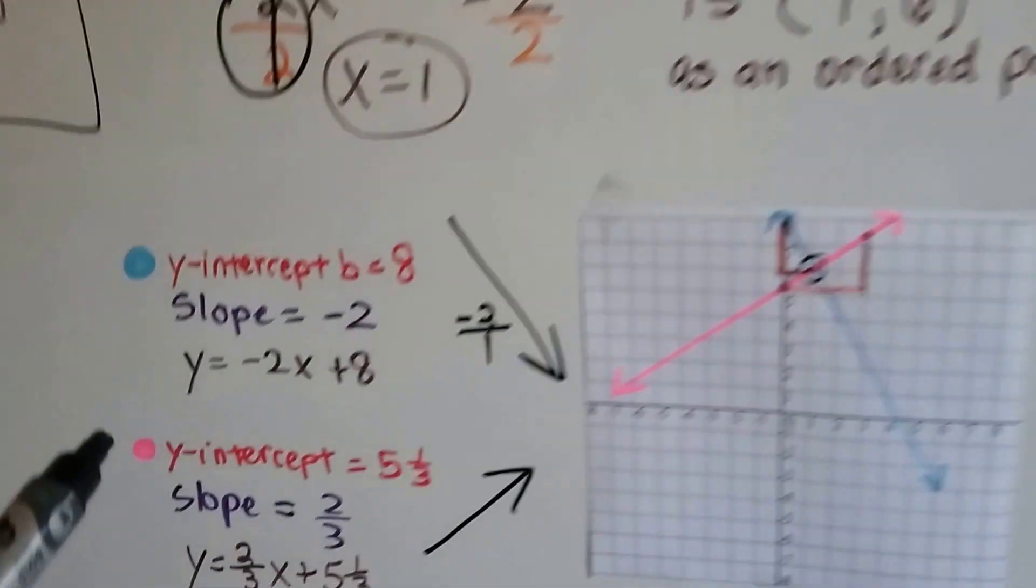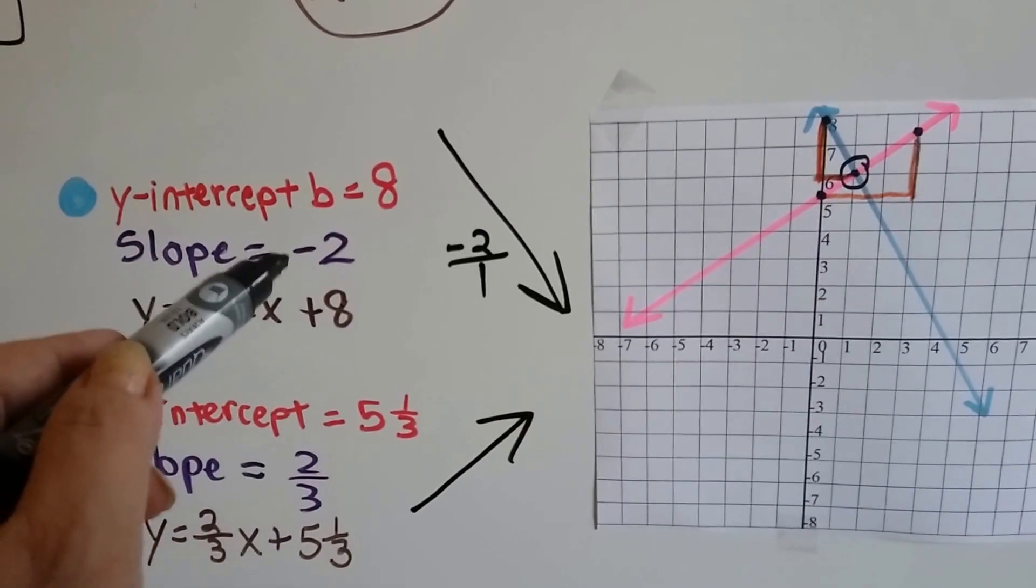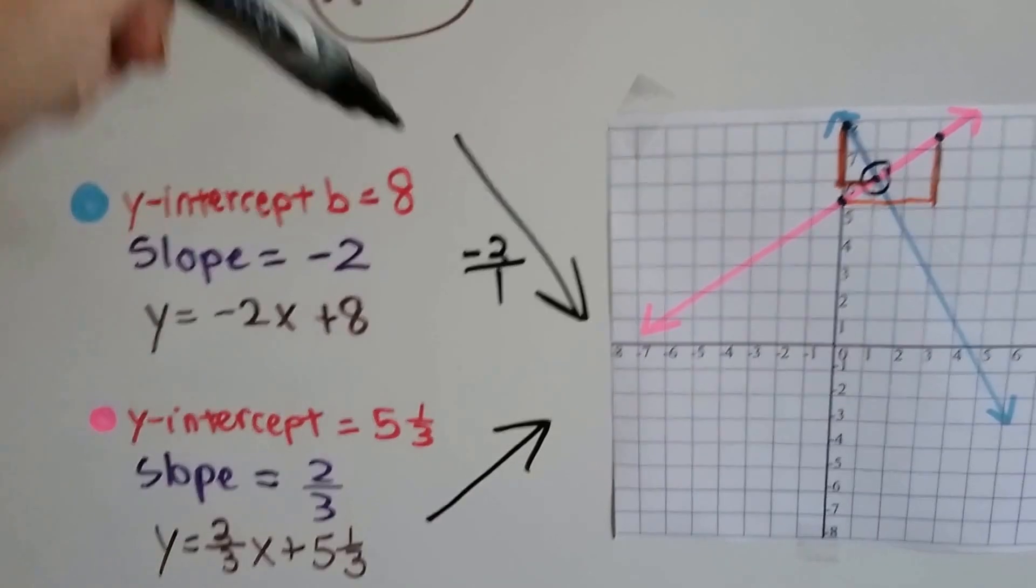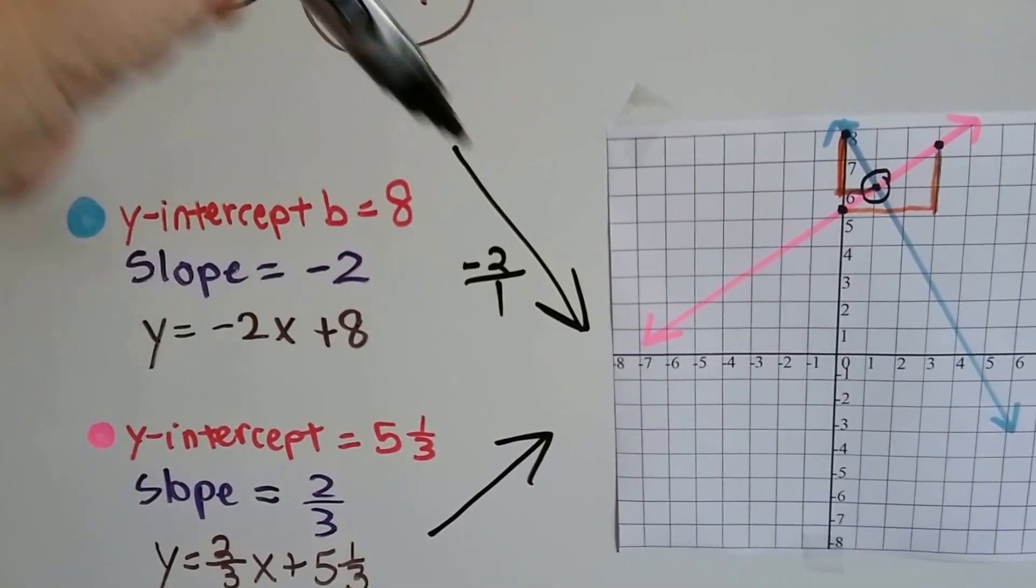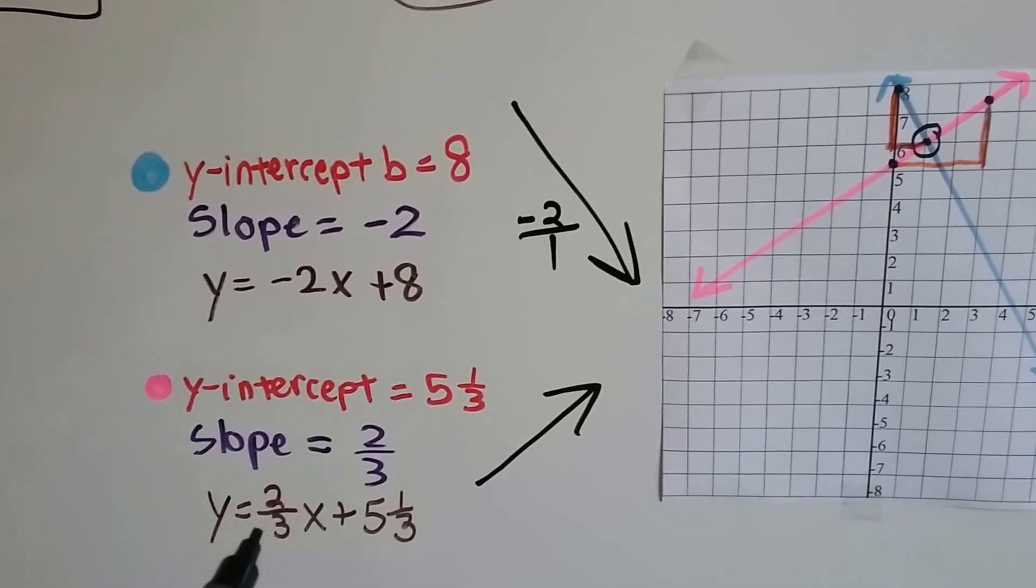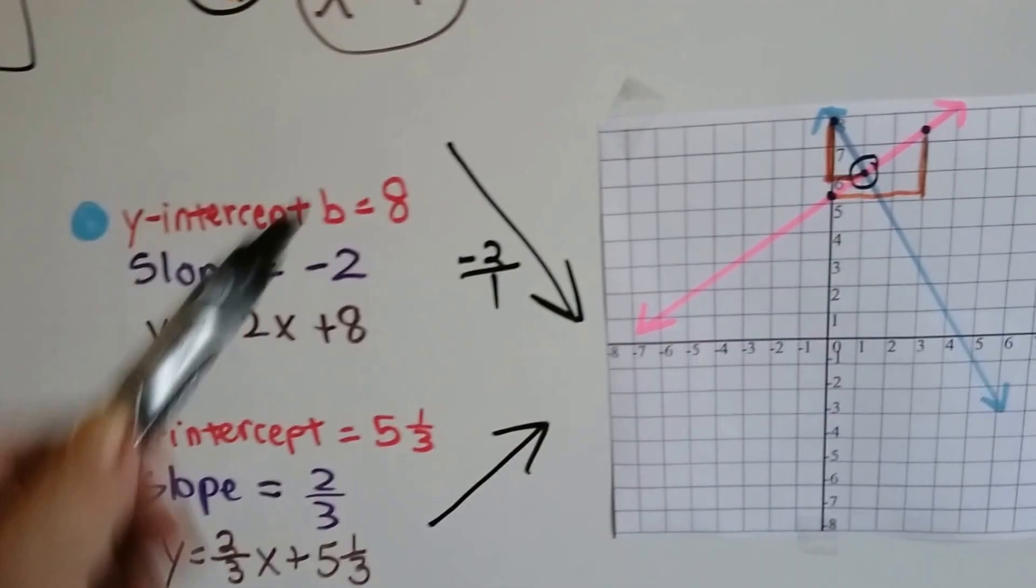So here we go. I've rewritten them over here. And because we see that this is a negative 2 for our slope, we know the line is going to come down this way. It's going to fall to the right, because it's a negative slope. And this one's got a positive 2 thirds, so it's going to rise to the right. So we already know which way our lines are going to go.